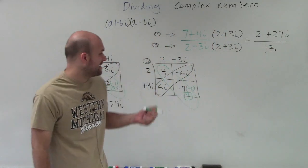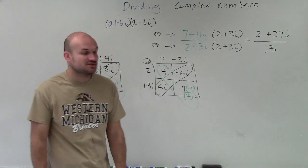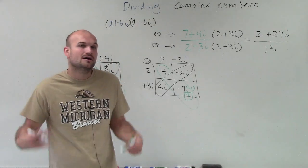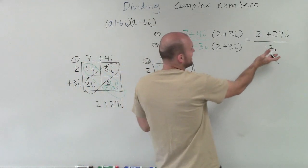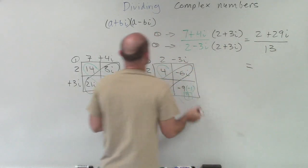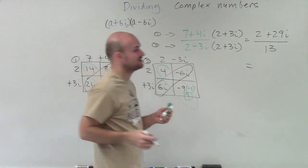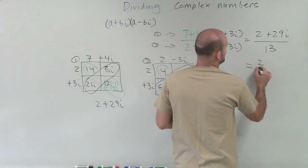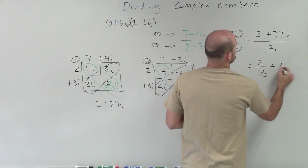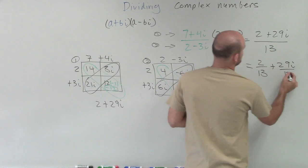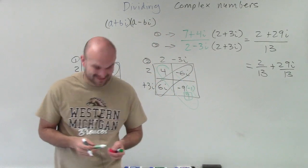So therefore, now I have my final answer. My answer is going to be 2 plus 29i divided by 13. Well, notice, I can divide this 13 in both those terms. So I can make sure my answer is in the form of a plus bi. So therefore, I have 2 over 13 plus 29i over 13. And that is going to be my final answer. Thanks.